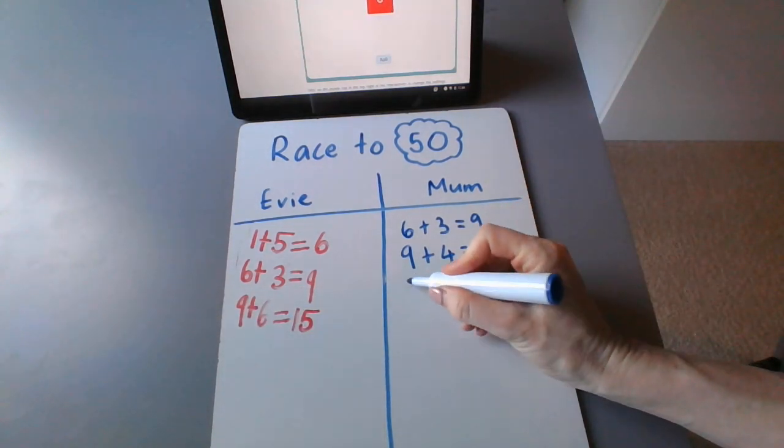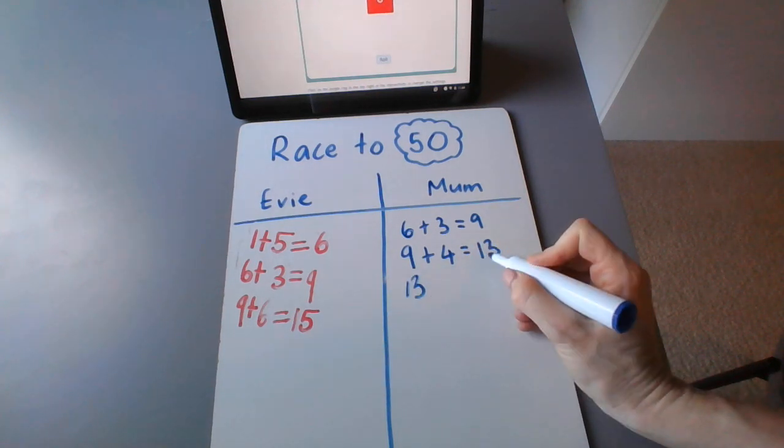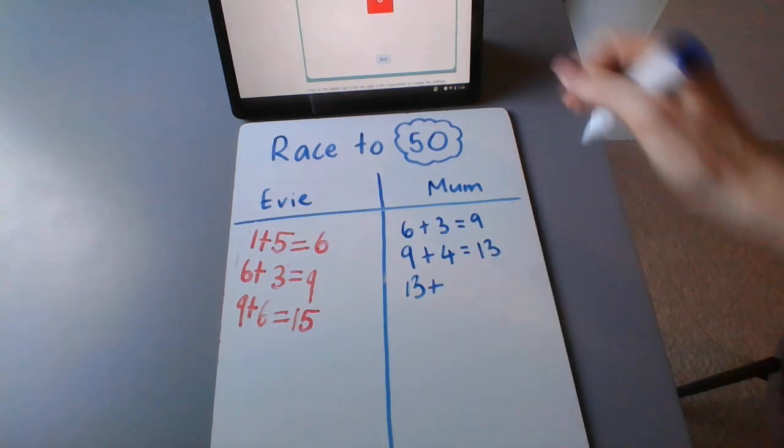All right, my turn. So I'm going to put my 13. Evie's ahead of me. Let's hope I get a big roll this time. I'm going to use my 13. That was my answer from my last sum. I'm going to go plus. I'm going to roll. Fingers crossed.